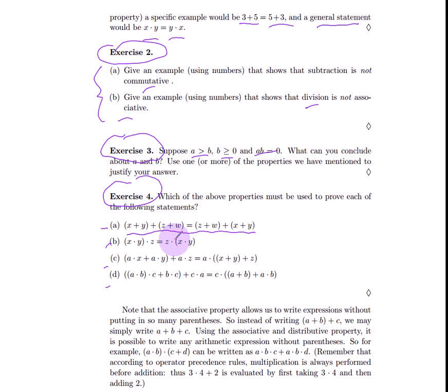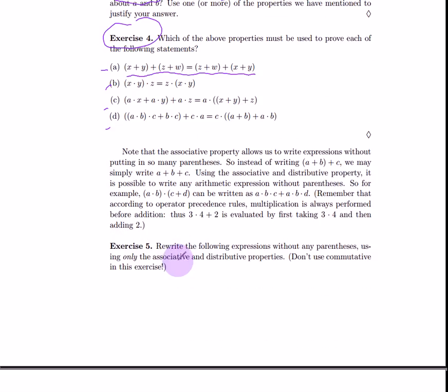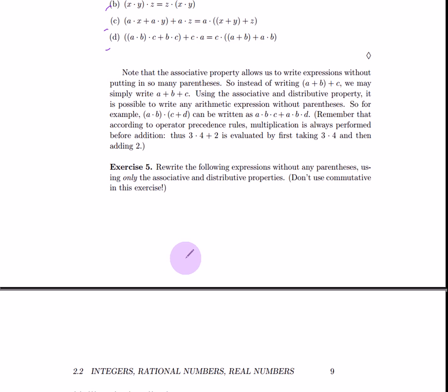Now, in some of these questions, you may need more than one property. You have to list only the properties that are needed. So, for instance, in the first one, only one property is sufficient. In the others, you may need more than one property. So, make sure you list all the properties and make sure you don't list extra ones.